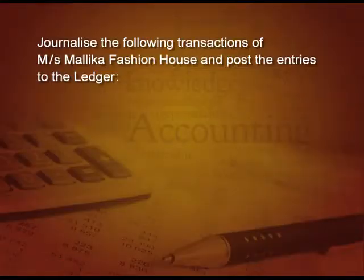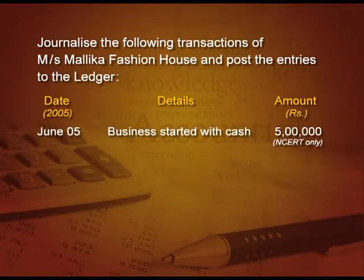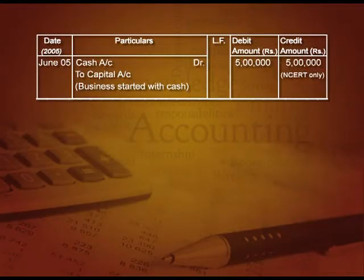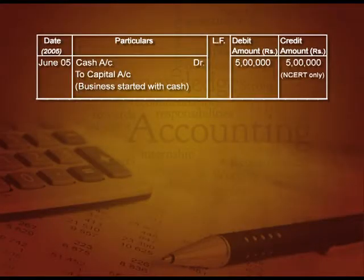We will now take a full question and show the journal entry and how the ledger accounts will be prepared. First: started business with cash 5 lakh. The entry will be cash account debit and capital account credit. So when we make the cash account, we will write on the debit side 'To Capital', and in the capital account we will write 'By Cash' — one debit and one credit.